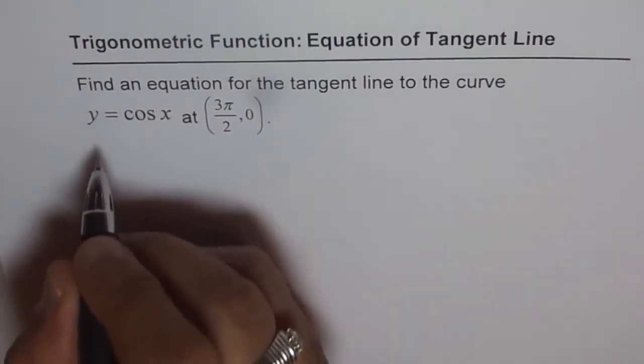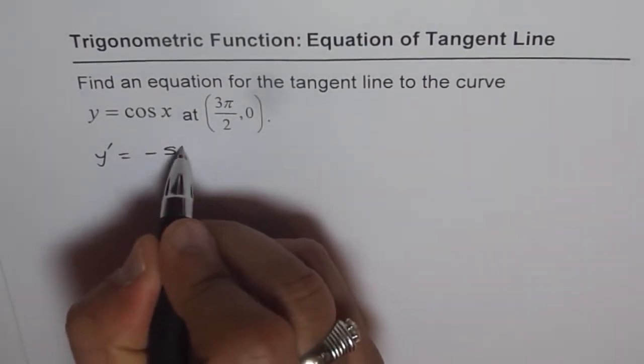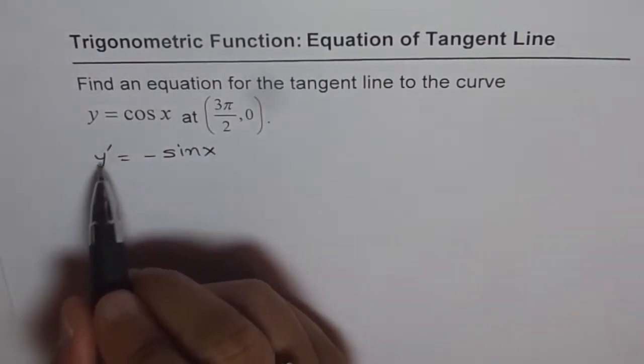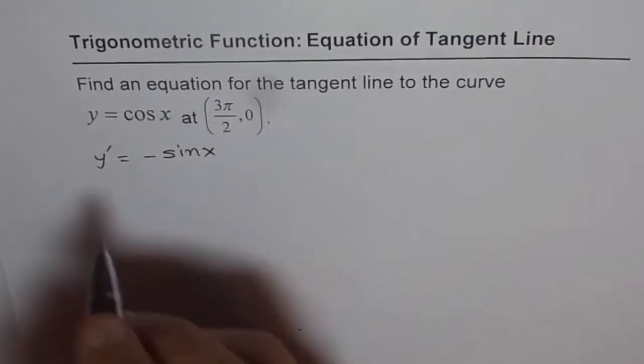So if y equals cos x, then y dash equals minus sin x. Now what is this y dash at x equals 3π/2? That's what we need to figure out.